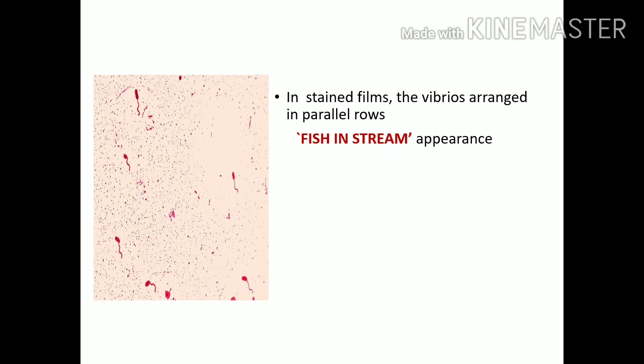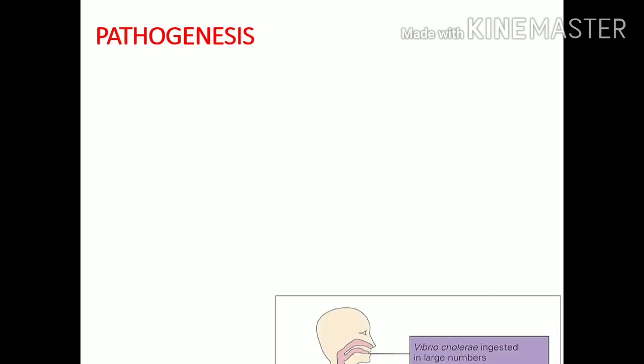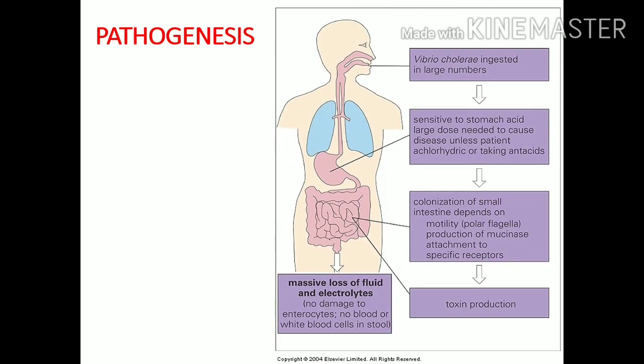When we see these bacteria in a stained field, vibrios are arranged in parallel rows, giving a 'fish in stream' appearance. When we examine the young broth — freshly incubated broth — the actively motile vibrios have been described using the term 'swarm of gnats.'